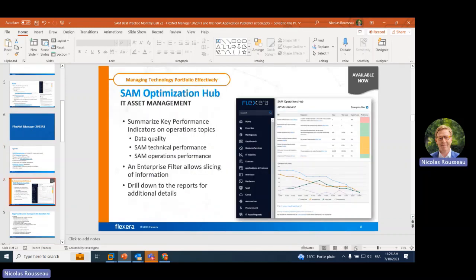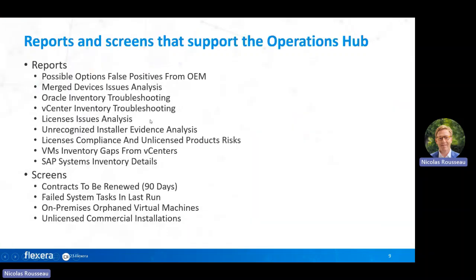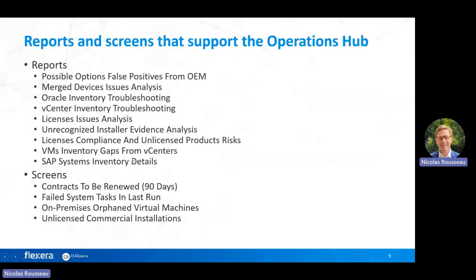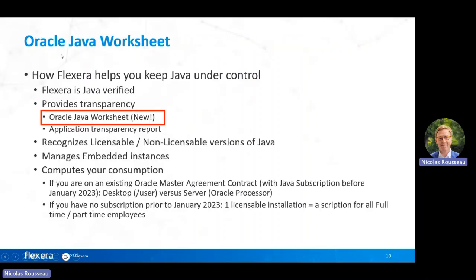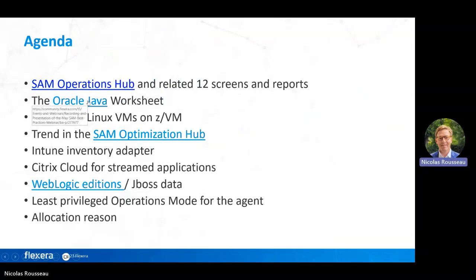Let's move on. You will see slides explaining the SAM Optimization Hub, the list of reports and screens, and you can also go to the full session to understand the details. Moving to the new 2023 R1 features: you have the Oracle Java Worksheet, which is something new. This is an extract from the SEM Best Practice Webinar delivered on Java in May — you have the link here.